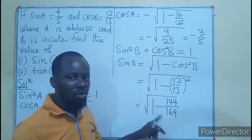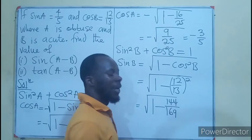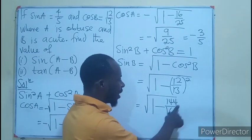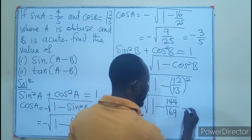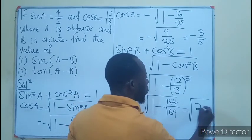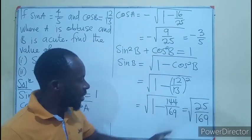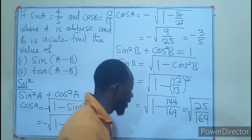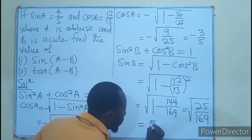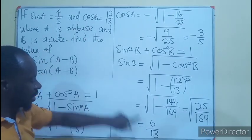We need a number that when added to 144 gives 169, which is 25. So sin B = √(25/169) = 5/13. So sin B = 5/13.